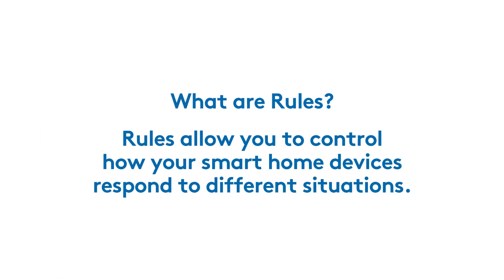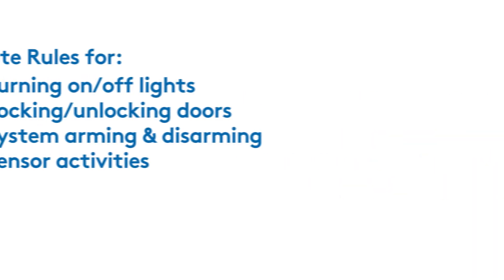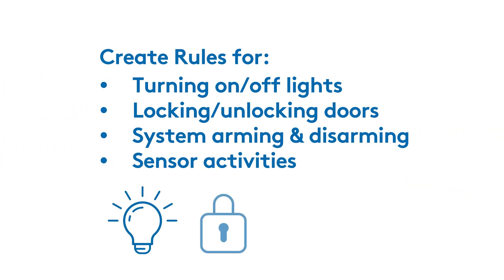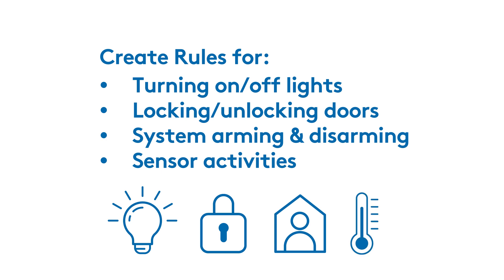Rules are custom actions you can set up to control how your smart home devices respond to different situations. You can create rules to automate your smart devices, from lights to locks to warnings, or to get alerts when your ADT sensors detect certain events like water leaks or temperature changes.